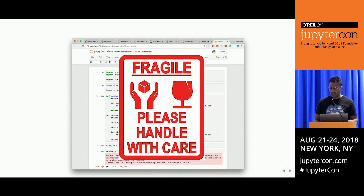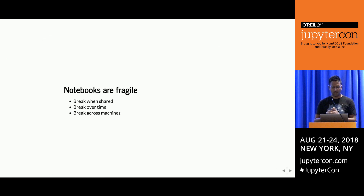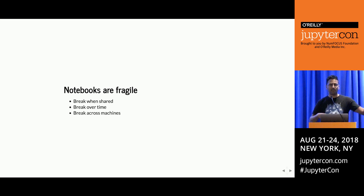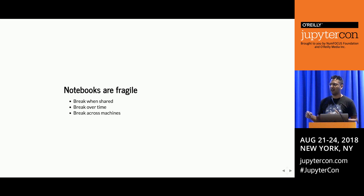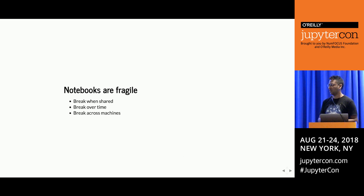Notebooks tend to be fragile. They break over time. When you share a notebook, you might forget: 'I have a one gigabyte CSV file on my machine that I didn't put in GitHub because it doesn't fit.' Notebooks break over time—somebody deleted this file on the network-attached storage drive and now I don't know how to run this notebook. And they tend to break across machines: 'Oh, you're on Windows—you need a different deserializer than we used on Unix.'